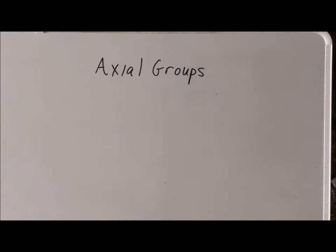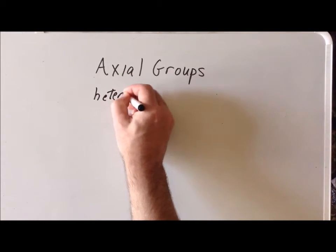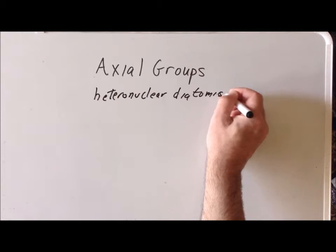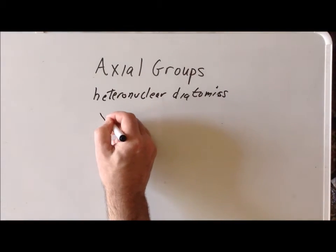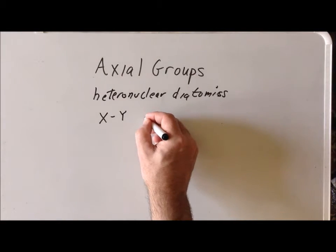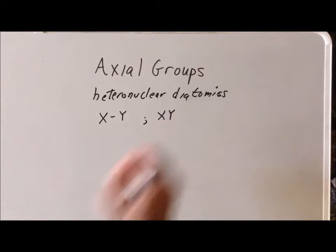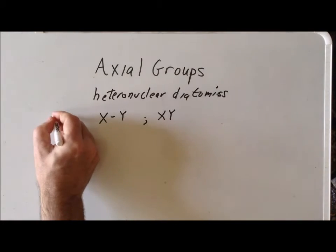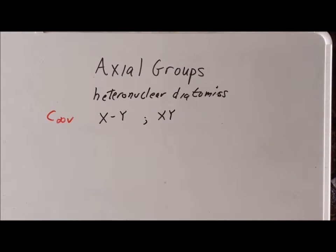A second class of important molecules that belong to the axial groups are the heteronuclear diatomic molecules. Each of these can be represented in the form XY, where X and Y are two different elements. Because we only have two atoms in the molecule, the structure has to be linear, and we recognize that these molecules belong to the point group C∞v.